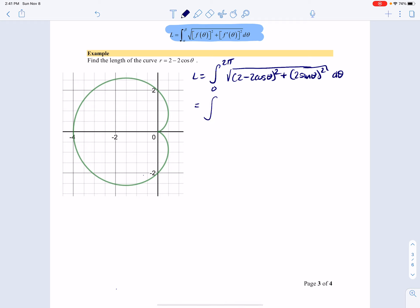So multiplying out under the radical. Remember, we can't do anything until we have single terms under the radical. This looks like 4 minus 8 cosine theta plus 4 cosine squared theta. And there's a 4 sine squared theta.